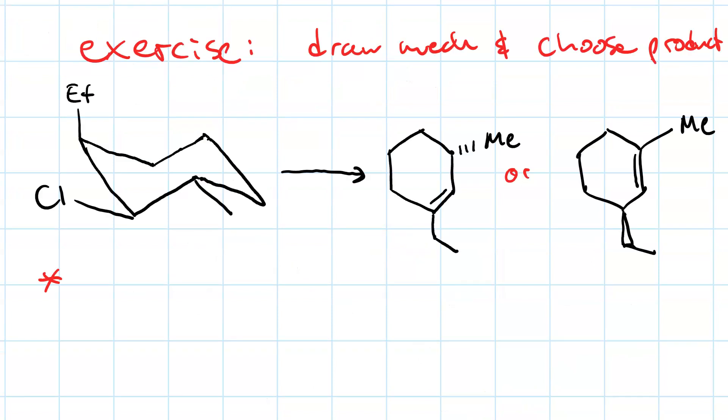So here's an exercise. Draw the mechanism and choose the product. Remember, the leaving group must be anti-periplanar to the beta proton that gets taken. Also include a ring flip in your mechanism. As usual, you're going to pause. Work it out to select your answer.